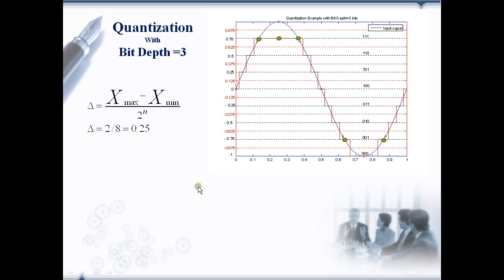So by changing the bit depth from 2 to 3, quantization levels are increased, step size is decreased, and the range of voltage that is used to map to a particular quantization level is reduced, which is in fact equal to the step size del.